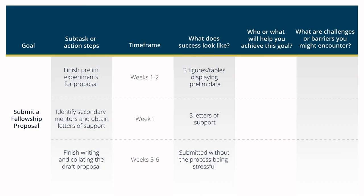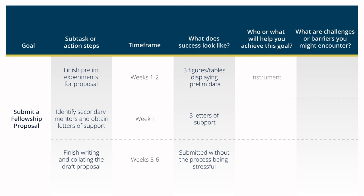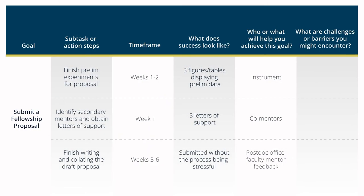This postdoc has also identified the resources and people she needs to help her be successful. She doesn't need help with the experiments, just instrument time. She does need co-mentors to complete her mentoring plan, and she'd like feedback from the postdoc office and her faculty mentor on the draft pieces of her proposal. A major barrier is time — she needs to make time to write even though her other experiments are ongoing. She's noticed she is more likely to write before getting into experiments, so she has blocked off mornings to work on drafts before starting the rest of her day.